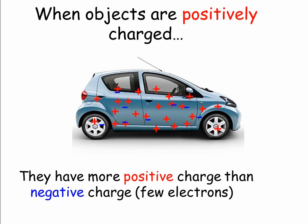When objects are positively charged, they've got more positive charge than negative charge. They've got few electrons — some of the electrons have left.